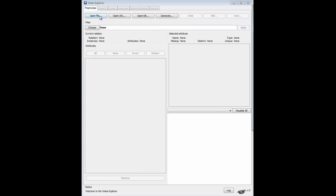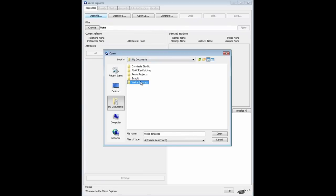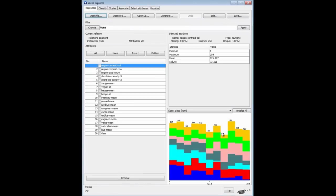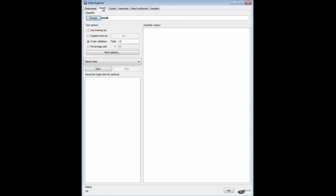I'm going to open the segment challenge data again. That's what we used before. Notice there's 1,500 instances here. That's quite a lot. I'm going to go to Classify.